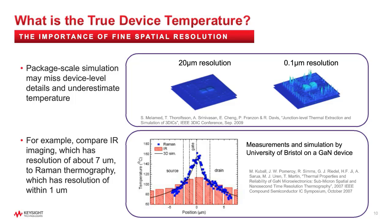We need much finer spatial resolution to resolve correct device temperatures on an IC. Measurements done by the University of Bristol on a GaN device show IR imaging with a resolution of about 7 microns compared to Raman thermography with a resolution of about 1 micron — and we're predicting much higher temperatures with finer resolution. This is important because if you're off by 10 degrees when predicting device temperature, that can have a huge impact on the performance and reliability you're predicting. So you need very fine spatial resolution.